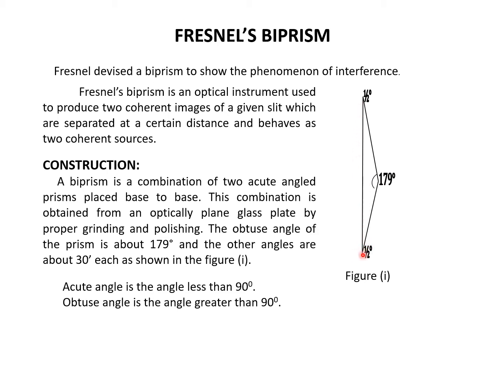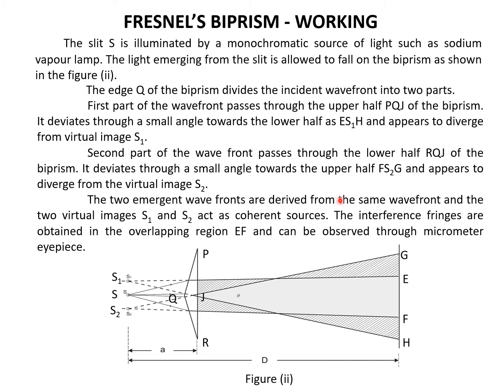The two acute angles are half degree and half degree. Half degree is nothing but 30 minutes because 1 degree is 60 minutes.